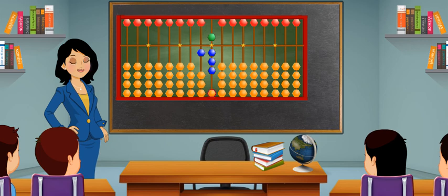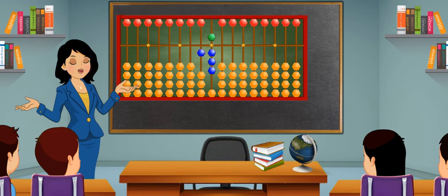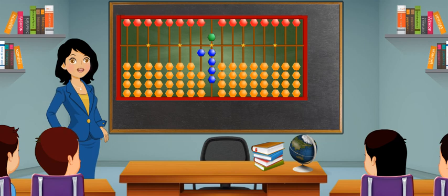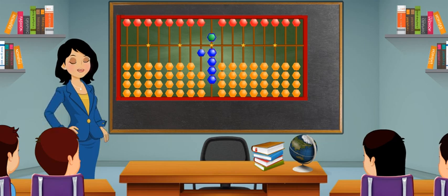To show number 19, one earthen bead on the tens place will remain the same and bring one more earthen bead upwards so that one heaven bead and four earthen beads touch the skyline to show nine on the ones place. This is number 19.